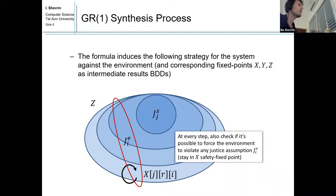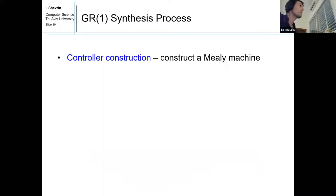At every step, the system also checks if it is possible to force the environment to violate any justice assumption i — that is, stay in the X safety fixed point for indices j, r, and i. These are the possible transitions, and from these transitions we construct the Mealy machine, which is the next stage: controller construction.